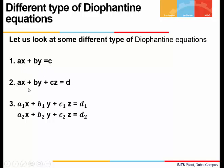The second equation is a single linear Diophantine equation in three variables x, y and z with coefficients a, b, c, d. The third example is a system of linear Diophantine equations in three variables. There are two equations and three unknowns x, y and z, with coefficients a1, b1, c1, d1, a2, b2, c2, d2.